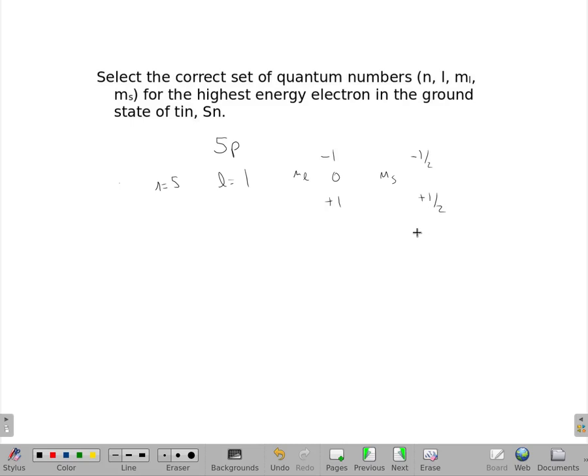So in this case, there are six possible answers. We're looking at n equals 5 and l equals 1, and then one of those three answers for the m sub l, and one of those two for the m sub s. Anything that doesn't have those is wrong.